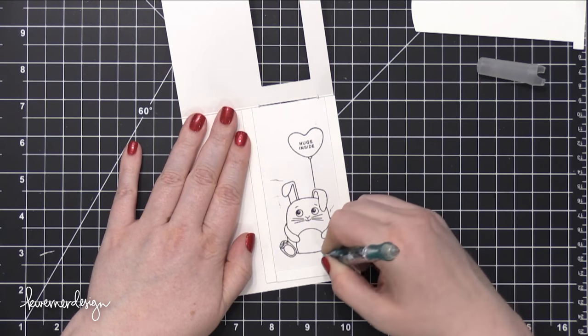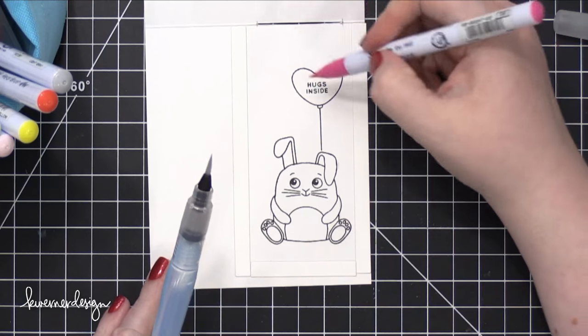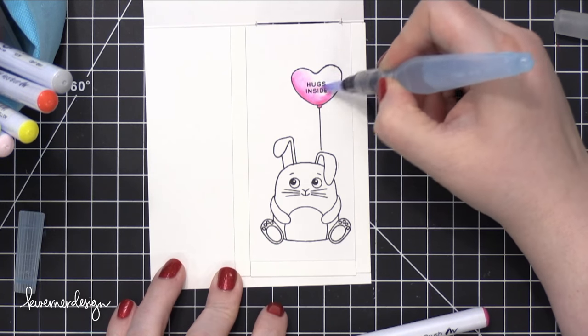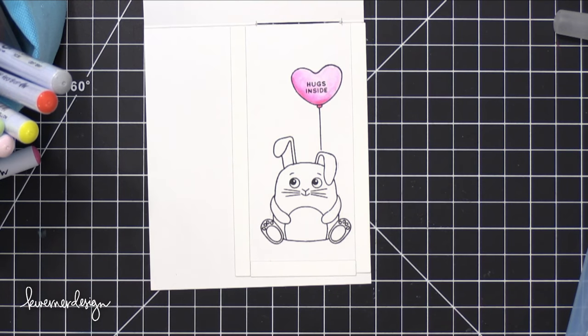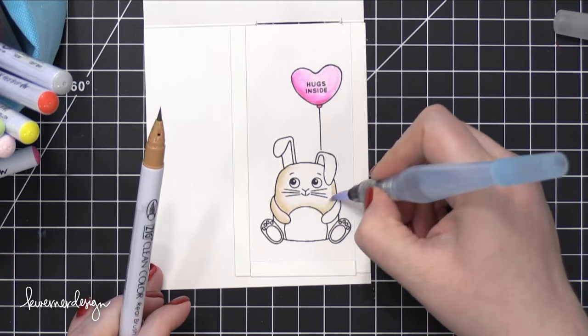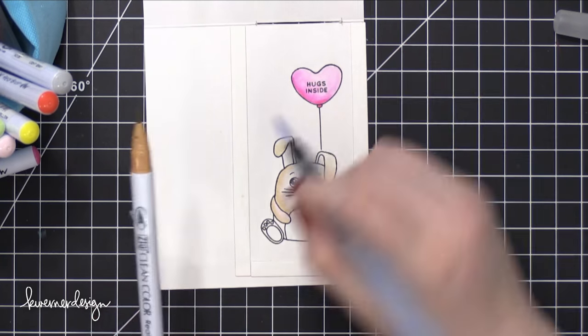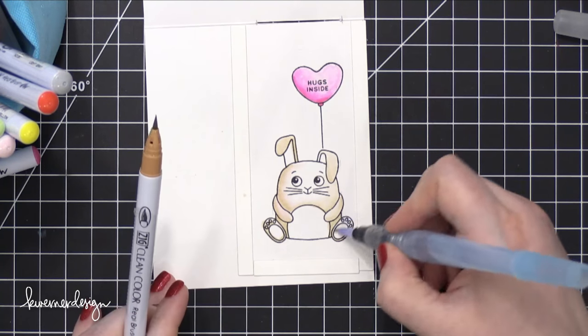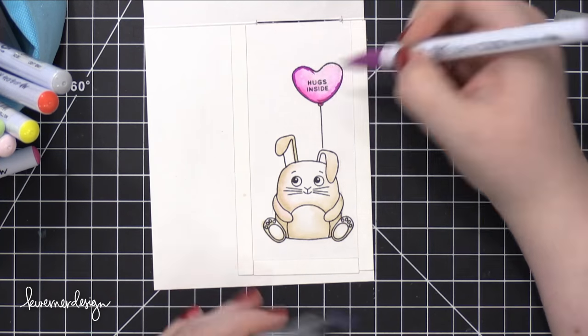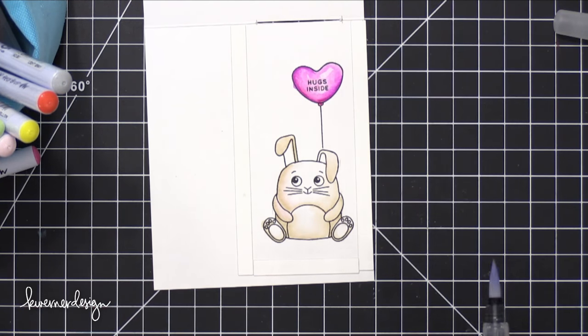So I'm going to erase the pencil lines, and then I'm going to move on to painting my scene here. I've sped up the video process quite a bit. The medium I'm using today is Zig Clean Color Real Brush Markers, and I'm also using a Pentel Aquash Brush. I love using these markers on top of Bristol paper. This is Strathmore Bristol paper.